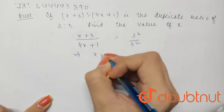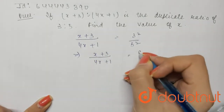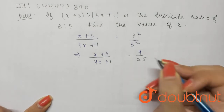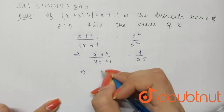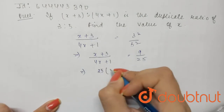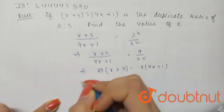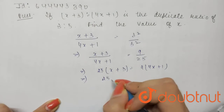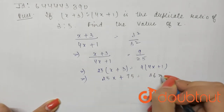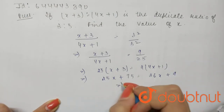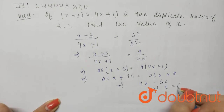If I cross multiply, I will get 25 into x plus 3 is equal to 9 into 4x plus 1. So this will be 25x plus 75 is equal to 36x plus 9, and 11x is equal to 66. So the value of x comes out to be 6.